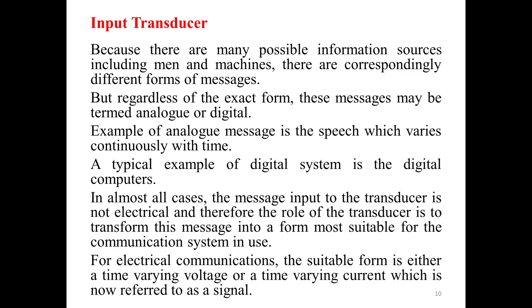Because there are many possible information sources, including men and machines, there are correspondingly different forms of messages. But regardless of the exact form, these messages may be termed analog or digital. An example of an analog message is speech, which varies continuously with time. A typical example of a digital system is digital computers. In almost all cases, the message input to the transducer is not electrical, and therefore the role of the transducer is to transform this message into a form most suitable for the communication system in use. For electrical communications, the suitable form is either a time-varying voltage or a time-varying current, which is referred to as a signal.